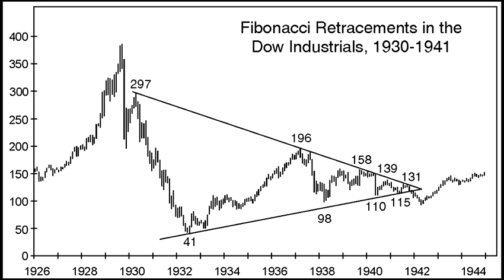Showing the 1930 to 1942 sequence, the market swings cover approximately 260, 160, 100, 60, and 38 points respectively — closely resembling the declining list of Fibonacci ratios: 2.618, 1.618, 1.00, 0.618, and 0.382.